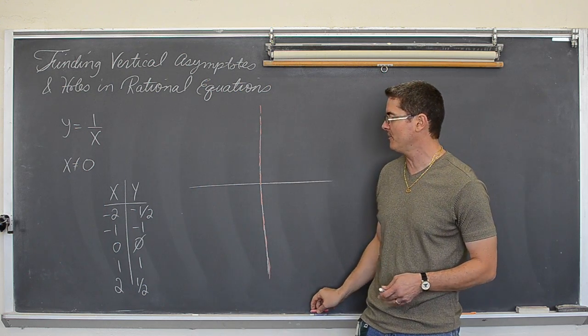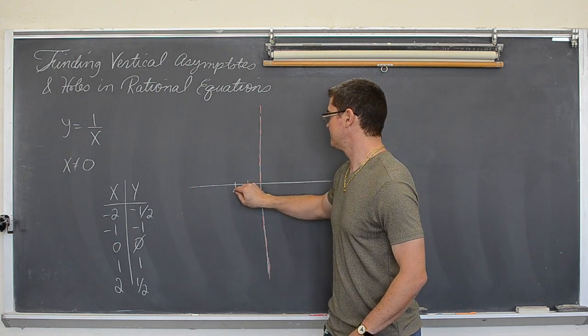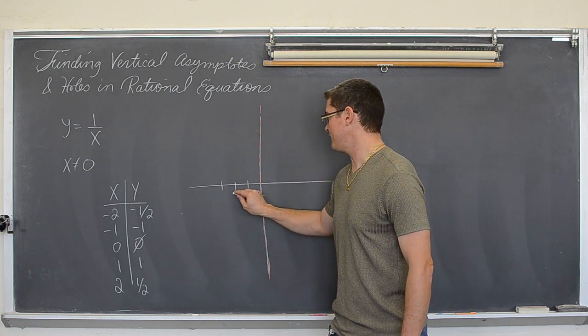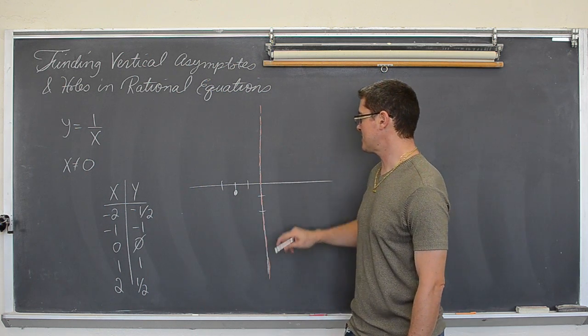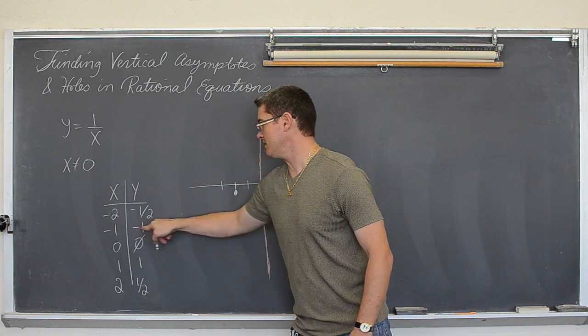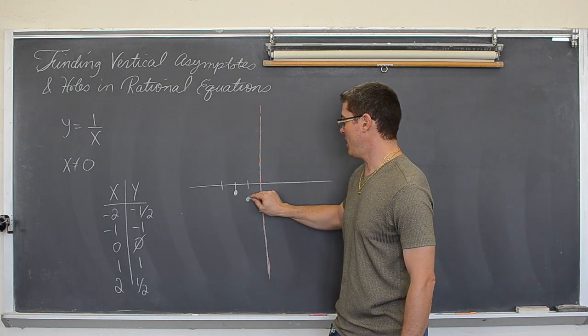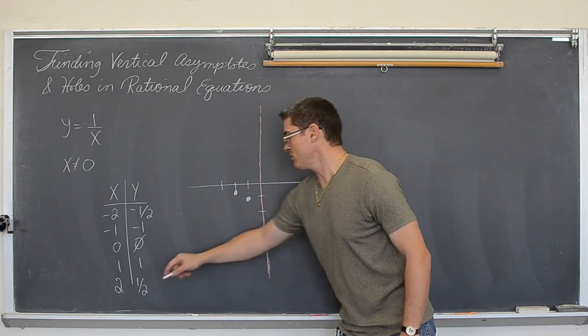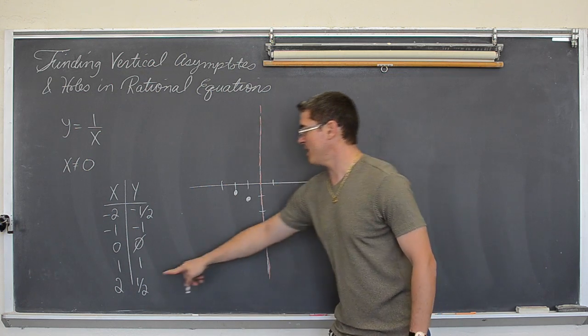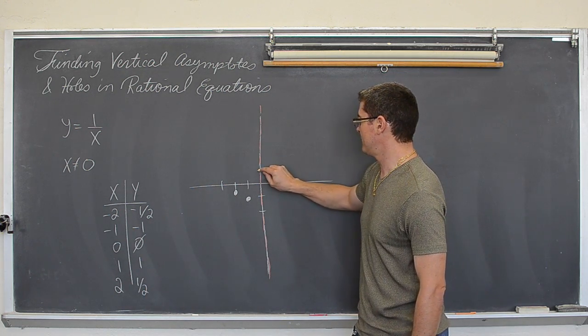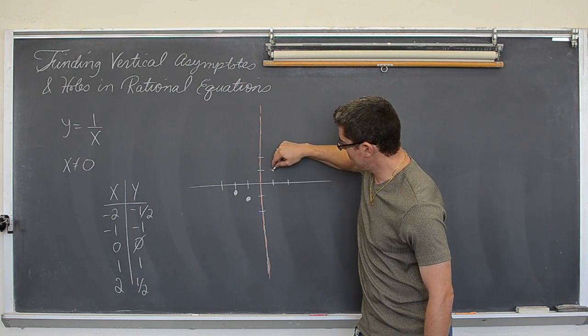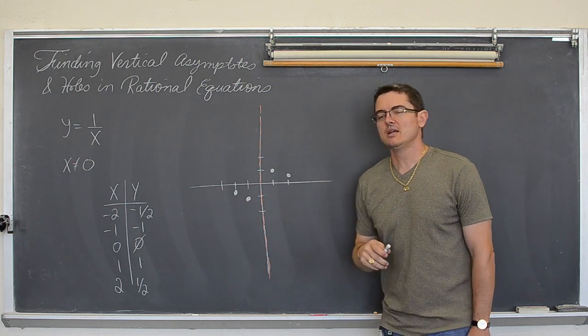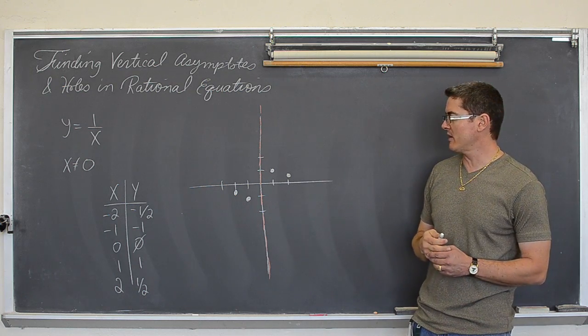But then what happens after that? At negative two, we are at negative one half. And at negative one, we are at negative one. At zero undefined. And at positive one, we are at one. And at positive two, we are at one half. Is that enough to actually let you see what's going on? Probably not.